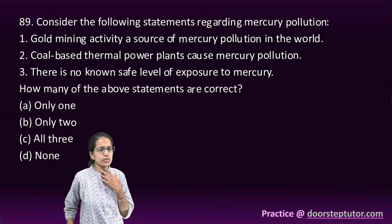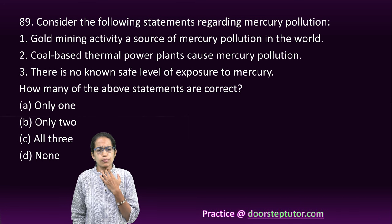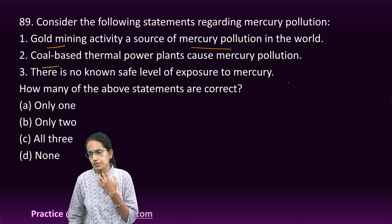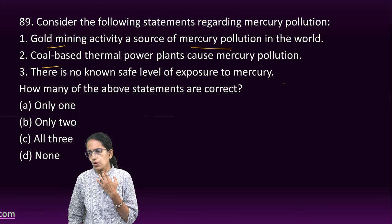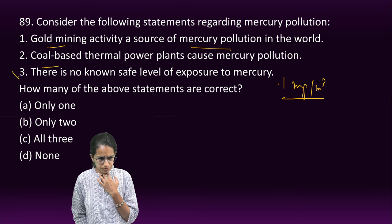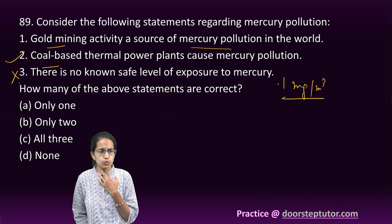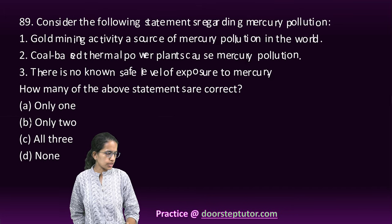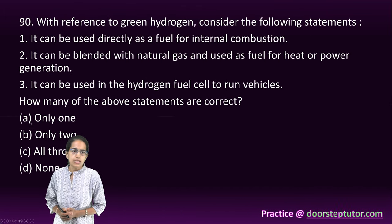The next question is about mercury pollution, which is caused by mining of gold and coal. There are safe exposure limits — around 0.1 milligrams per cubic meter — so the statement about safe limits is incorrect. Statements 1 and 2 are correct, so only two of the options are correct.